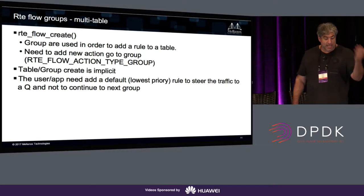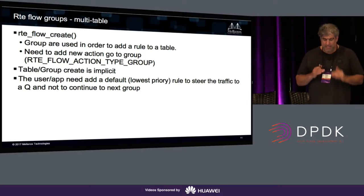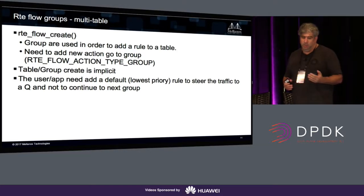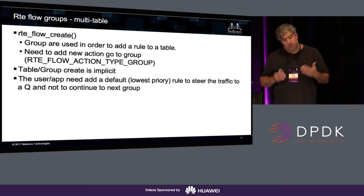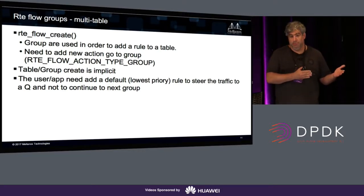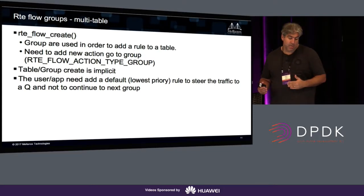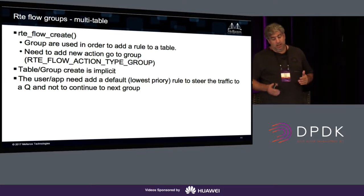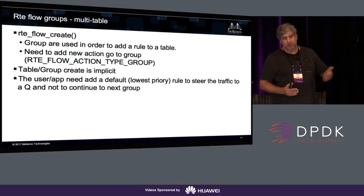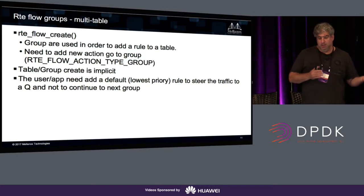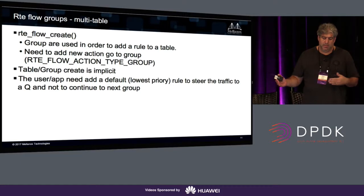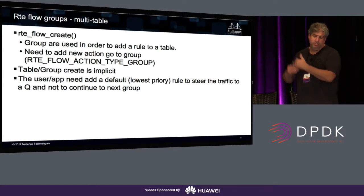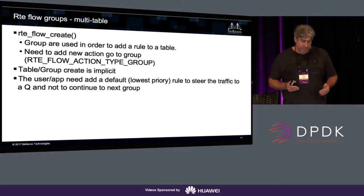I want to suggest extending RTE flow with a 'groups' concept. Right now groups exist but aren't fully organized. The idea is that a group represents a table — when creating a rule, you specify which group it belongs to, allowing rules to be added to a specific table. The second extension needed is a 'go-to group' action: you classify on group 0 by default, and based on the flow specification, redirect to a different group or table, where you can then use a flow tag or whatever is required.